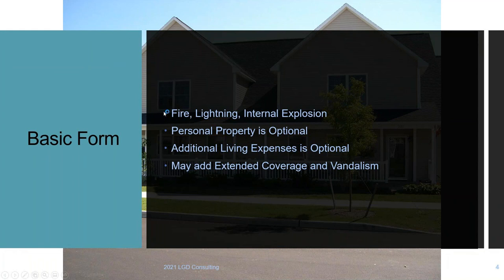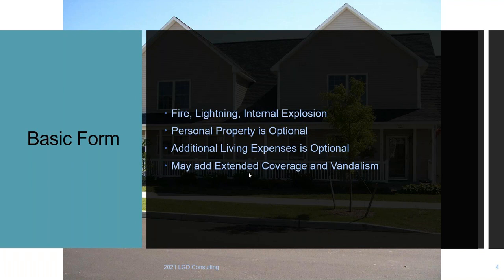The basic form covers only fire, lightning, and internal explosion, so it's limited. For a slight additional charge you can add extended coverages — a package of seven additional perils. I use the abbreviation WHARVES: W is windstorm, H is hail, A is aircraft (not one you own, but one that crashes into your house), R is riots, V is vehicles (again, not one you own), E is explosion (internal or external), and S is smoke.